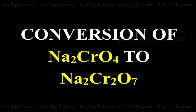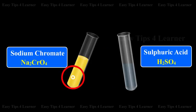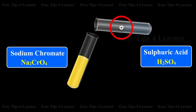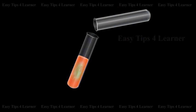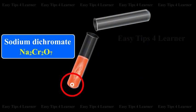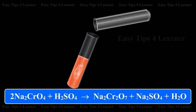Step 2: Conversion of sodium chromate to sodium dichromate. The sodium chromate solution obtained is filtered and treated with concentrated sulfuric acid, converting sodium chromate to sodium dichromate. 2Na2CrO4 + H2SO4 gives Na2Cr2O7 + Na2SO4 + H2O.